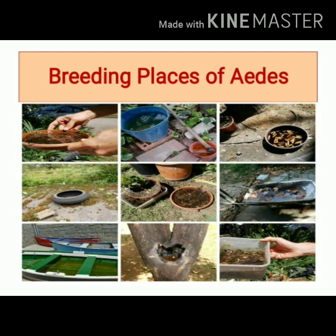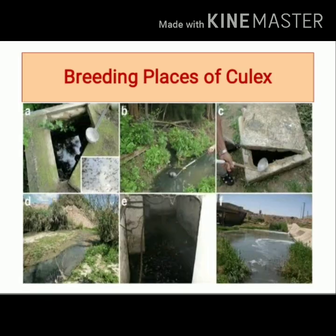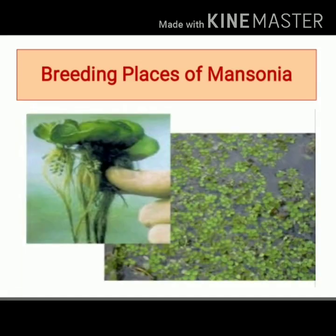Aedes mosquito breeds in stored or artificially collected water, such as water collected in coconut shells, broken glass, vehicle tires, etc. Culex mosquito prefers to breed in dirty water like cesspools or septic tanks. Mansonia mosquitoes breed in ponds or lakes containing aquatic plants like Pistia or water hyacinth.